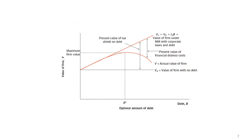This figure shows the relationship between debt and value of the firm. The horizontal line VU represents the value of the firm with no debt. The red line VL is the value of the firm under the Modigliani-Miller theorem with corporate taxes and debt. The distance between VU and VL is the present value of the tax shield — the value of the levered firm is higher than the value of the unlevered firm.